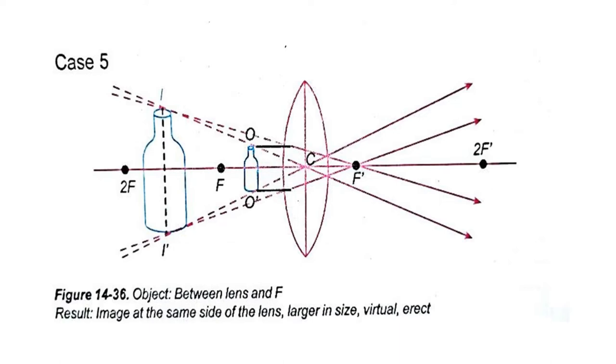Now, let's look at case number five, where we put our object between the lens and the F point. We can see that the image formed is on the same side of the lens, larger in size, it is virtual and erect.